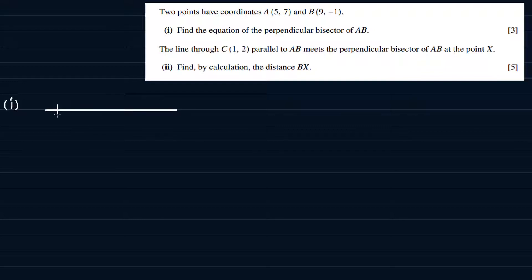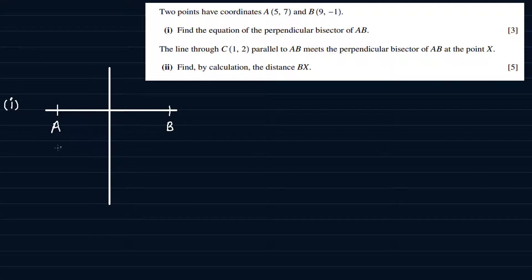So we have the line AB and the perpendicular bisector here. A has coordinates (5, 7) and B has coordinates (9, -1), and we want to find the equation of the perpendicular bisector.